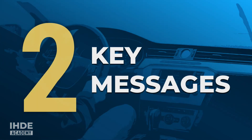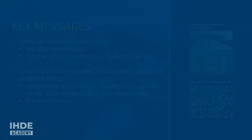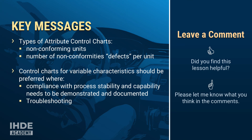That was a lot of new information, so let's conclude by repeating the two most important key messages. First, there are basically two types of control charts for attributes: A, for non-conforming units, and B, for the number of non-conformities or defects per unit. Second, control charts for variable characteristics should be preferred where A, compliance with process stability and capability needs to be demonstrated and documented, and B, for troubleshooting. Thank you for watching — take care and see you next time.